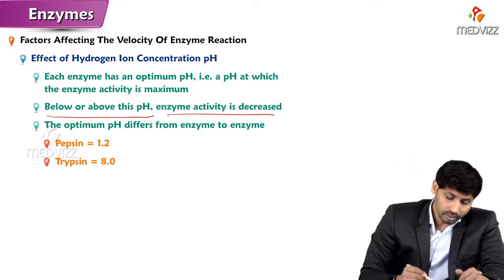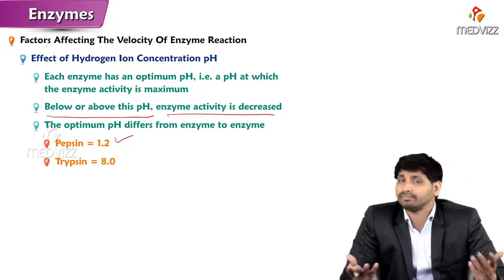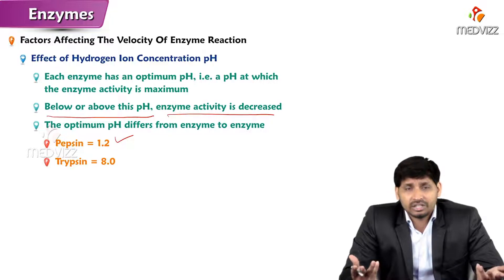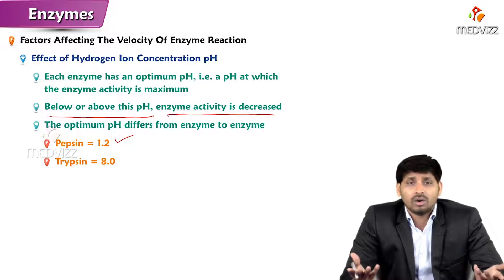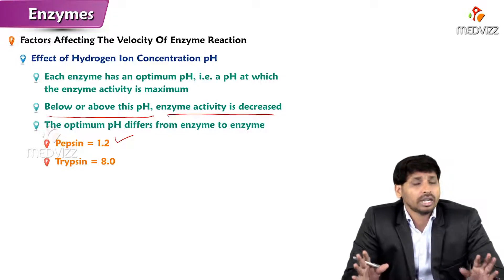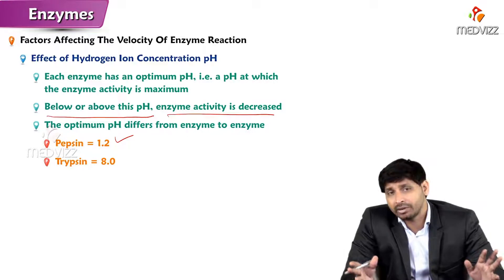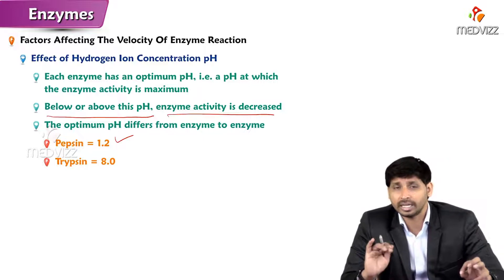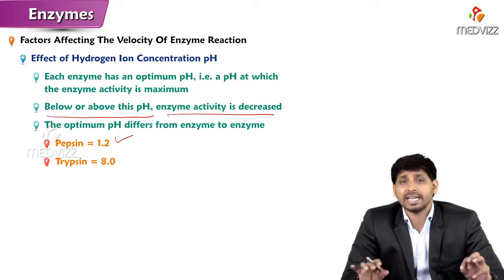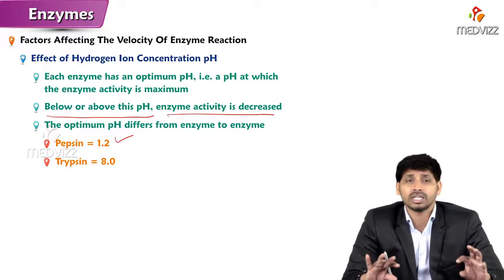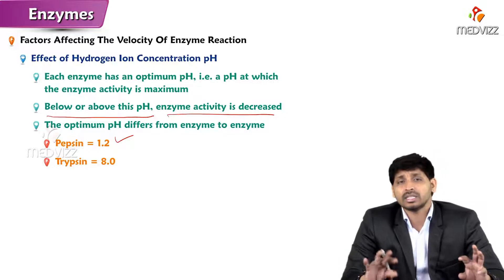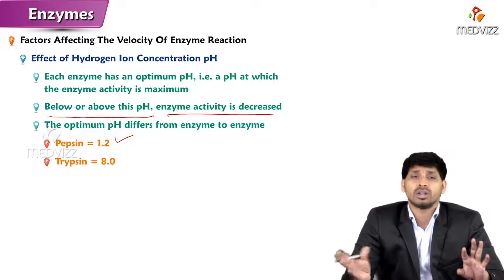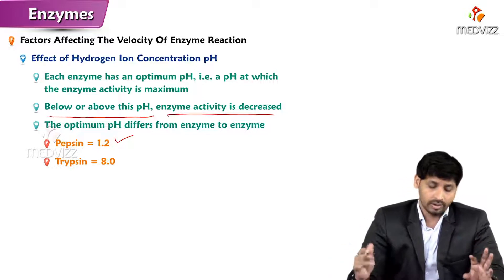For example, pepsin is a digestive enzyme produced in the stomach where acidic conditions exist due to HCl — so pepsin works in acidic conditions, but amylase is alkaline in nature and will not work in an acidic environment. That is why when food mixed with HCl enters the intestine, the pancreas first releases a watery secretion to dilute the acidic chyme, and only then do alkaline enzymes like amylases and lipases work on the food.